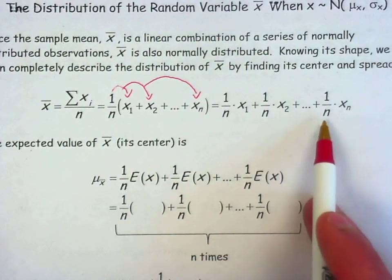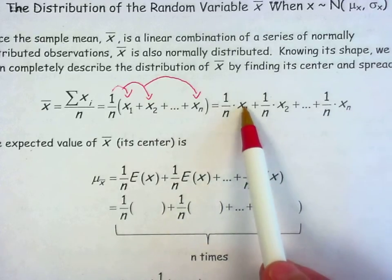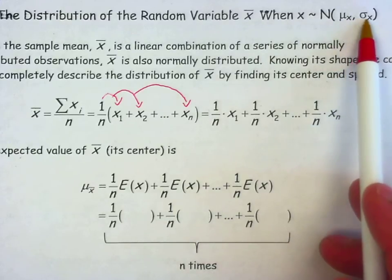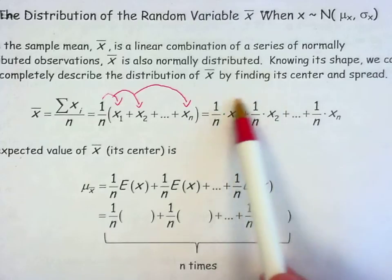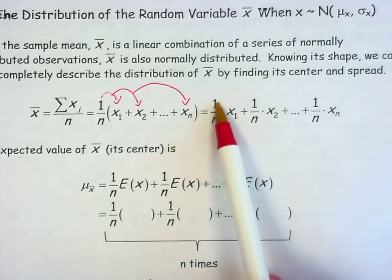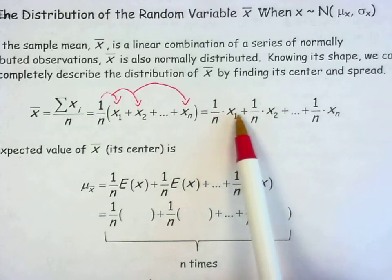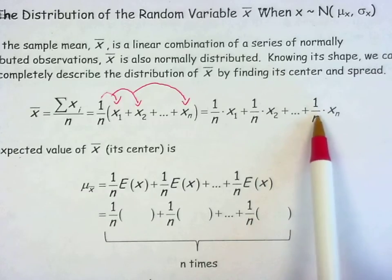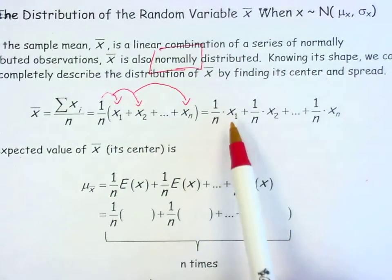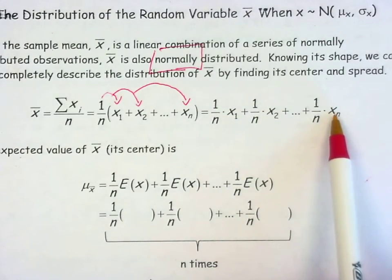Each one of these x values comes from this population, which is normally distributed with this mean and standard deviation. A sample mean is a linear combination of those — I'm multiplying by 1 over n and adding all of these terms together. So I already know that the shape for these sample means is going to be normal, because a linear combination of normally distributed variables is still normal. We just have to decide what the center and spread are.